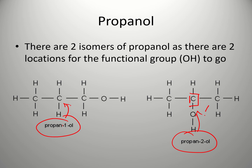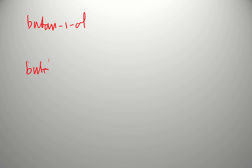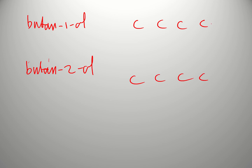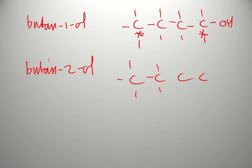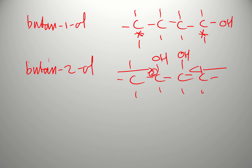As a bit of practice, try drawing butan-1-ol and butan-2-ol. Pause the video and draw them. 'But-' tells us four carbons. For butan-1-ol, the OH group is on position one — the end carbon — then draw in all your hydrogens. For butan-2-ol, the OH group is on position two, which is either of the two middle carbons depending on which end you label from — either way is fine.